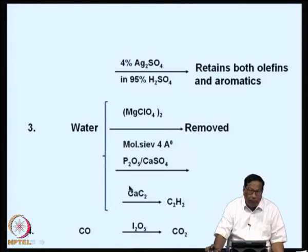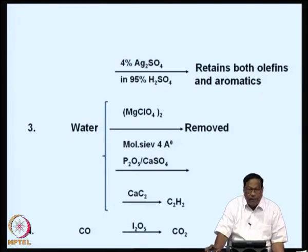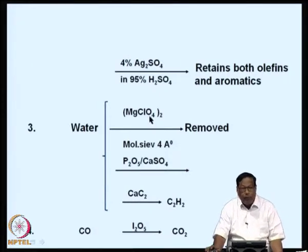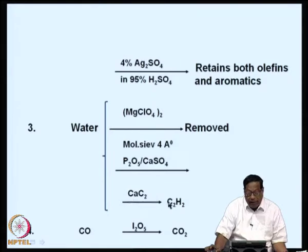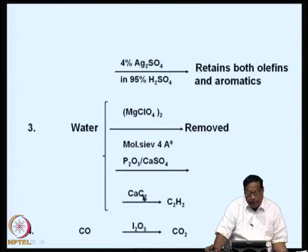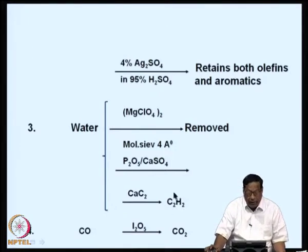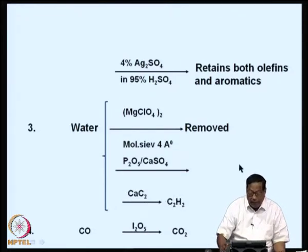If you want to remove water because it could be an impurity, you can use magnesium perchlorate solution, a molecular sieve, P₂O₅ (phosphorous pentoxide), calcium sulphate, or calcium carbide. In all these, water will be removed, except with calcium carbide where the water content would generate acetylene. This is a standard reaction covered in any organic chemistry textbook.